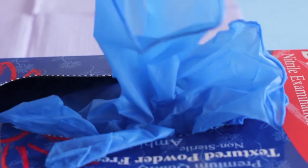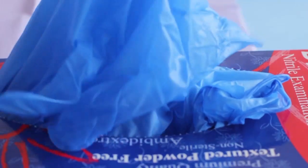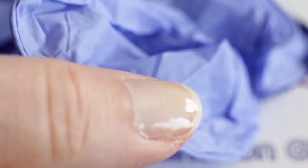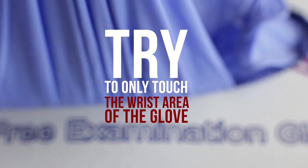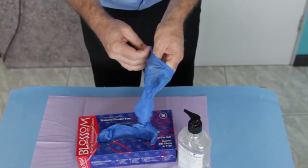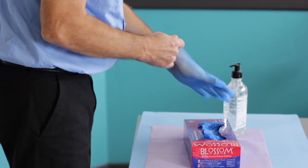Touching only the cuff, take the first glove out of the original box. Try to only touch the wrist area of the glove, in other words, the top end of the cuff. Don the first glove by sliding it over the fingers, palm, and wrist.